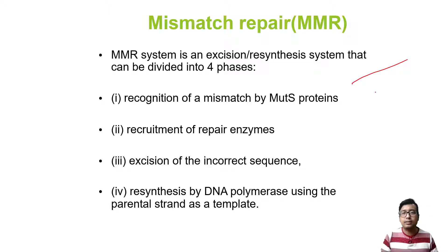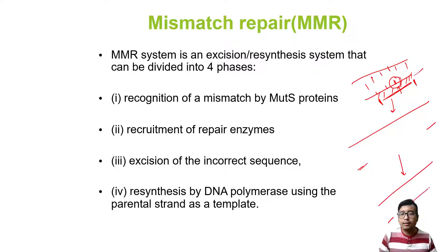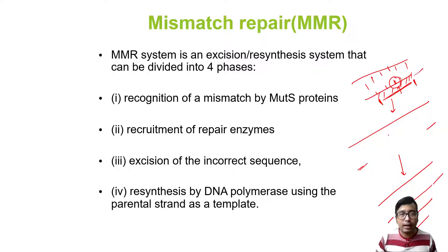Suppose this is a mismatch strand — there is a mismatch here. These are the complementary bases and here there is a mismatch. It will first be identified, then this whole portion of the sequence is actually removed. Now there is a gap in the sequence. This leads to formation of a new strand by DNA polymerase and ultimately joining of the new strands by DNA ligase. The last two steps are common for all repair mechanisms.